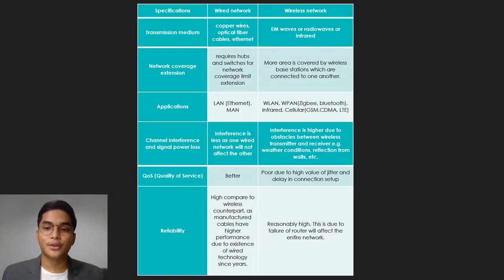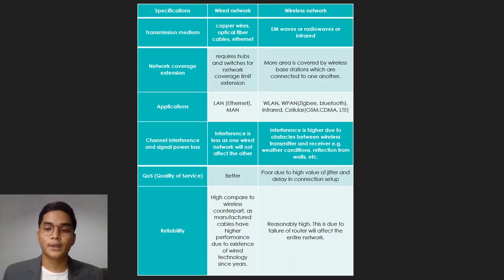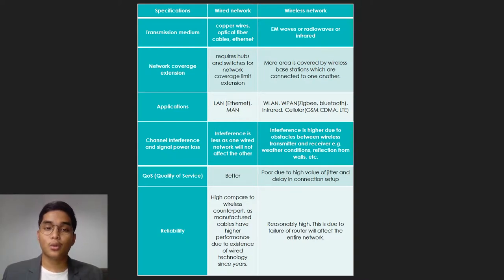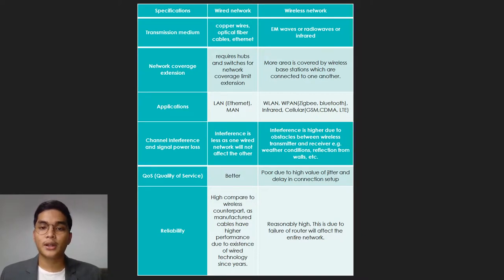The sixth parameter is transmission medium. In the wired network it is copper wires, optical fiber cables, and ethernet. In the wireless network it is EM waves, radio waves, or infrared. The seventh specification is network coverage extension. In the wired network, network coverage extension requires a hub and switch. In the wireless network, more area is covered by wireless base stations which are connected to one another. The eighth parameter is application. In the wired network, applications are LAN or ethernet. In the wireless network, applications are WLAN or WPAN.